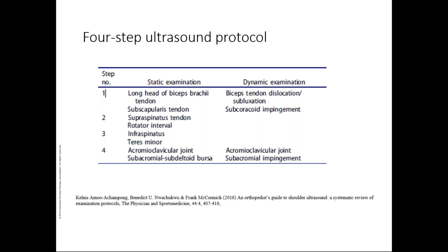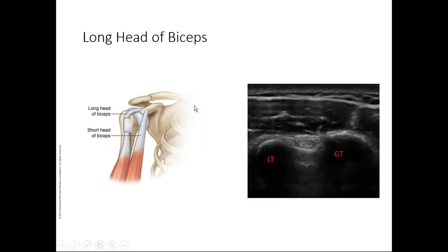For example, if the first structure you study — the long head of biceps tendon — shows fluid around it in the groove, that should prompt you to look very carefully at the supraspinatus, because this likely indicates a supraspinatus tear. It can also suggest a SLAP lesion, which you may not see directly because it's intra-articular, but fluid around the biceps tendon is one of the indirect signs.